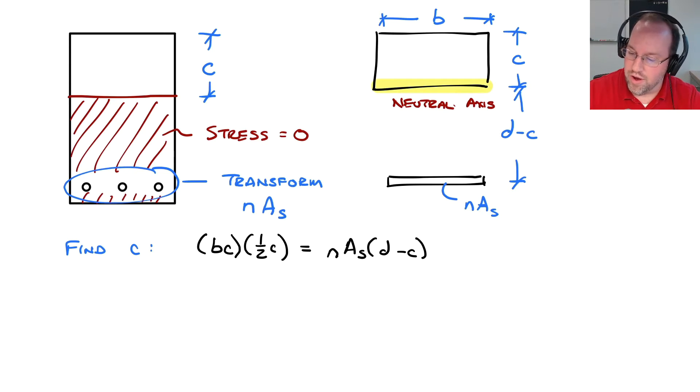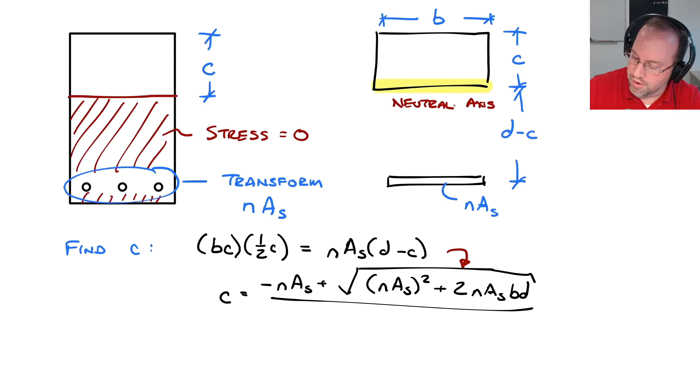Now, this is a quadratic equation, and we're not going to go through the algebra of solving that. Rather than that, I'll just show you the result. We'll find that from this, C is equal to negative N times AS plus the square root of N times AS quantity squared plus 2 N AS B D, all divided by B. So you can see this has the similar form that we recognize from a quadratic equation. However, there's no plus or minus here. The reason for that is if you put the minus in, you would find that C is a negative number, and that's never going to happen.